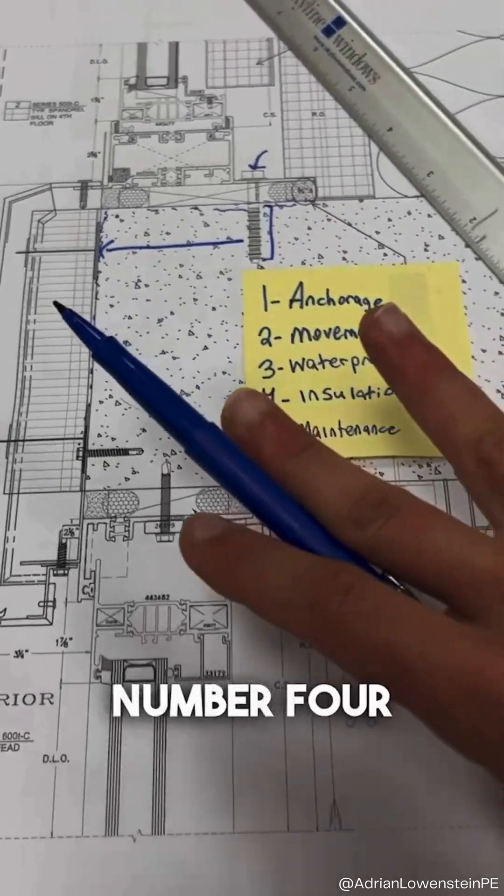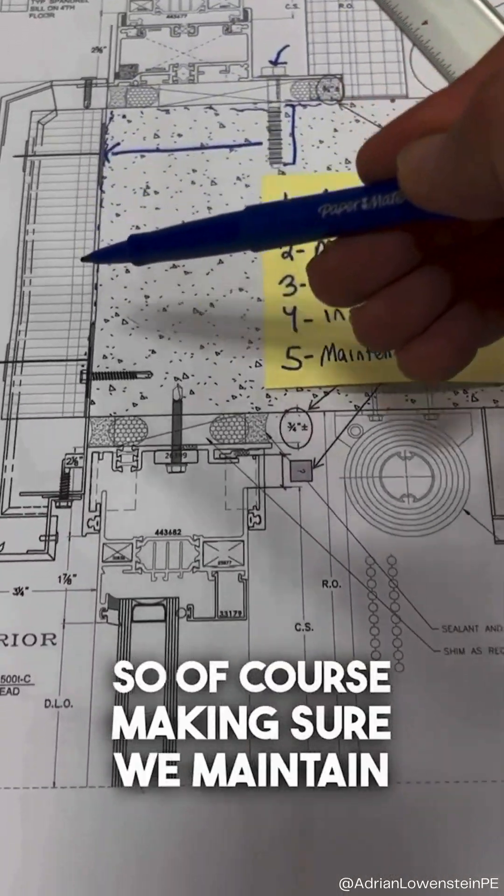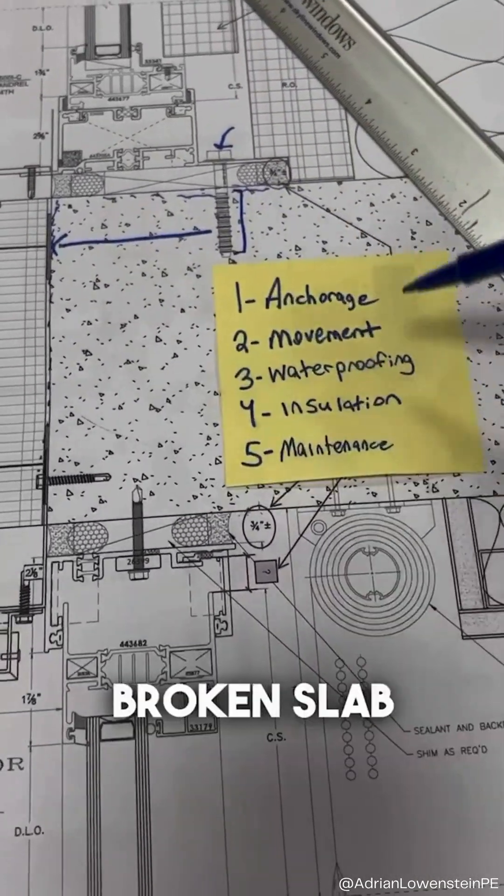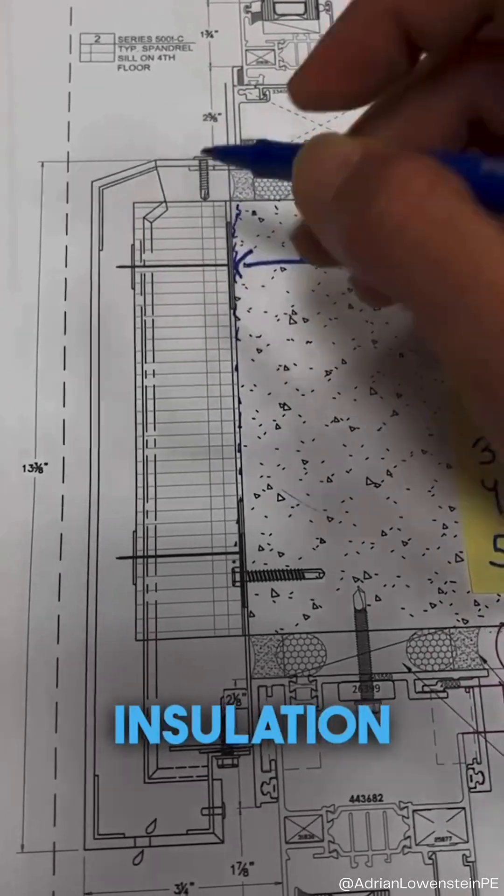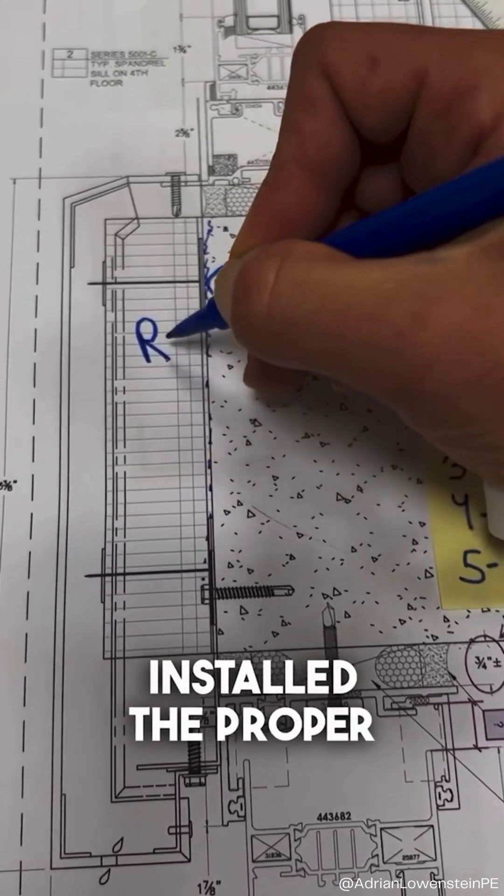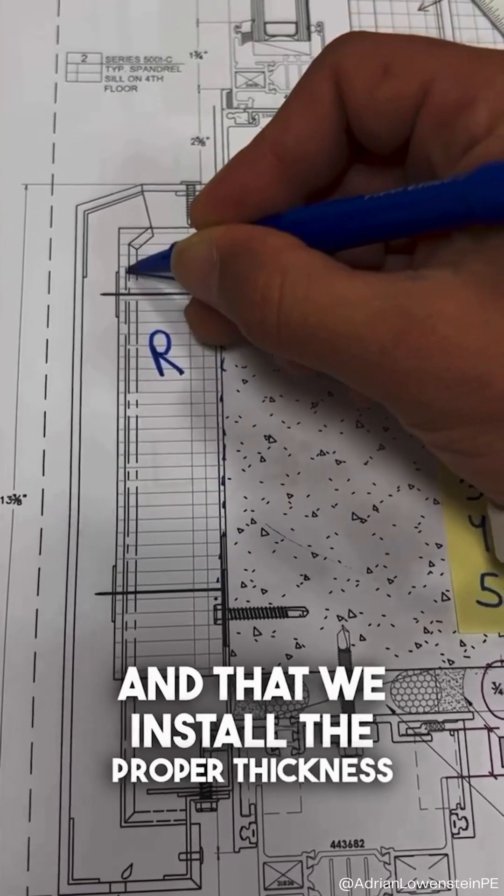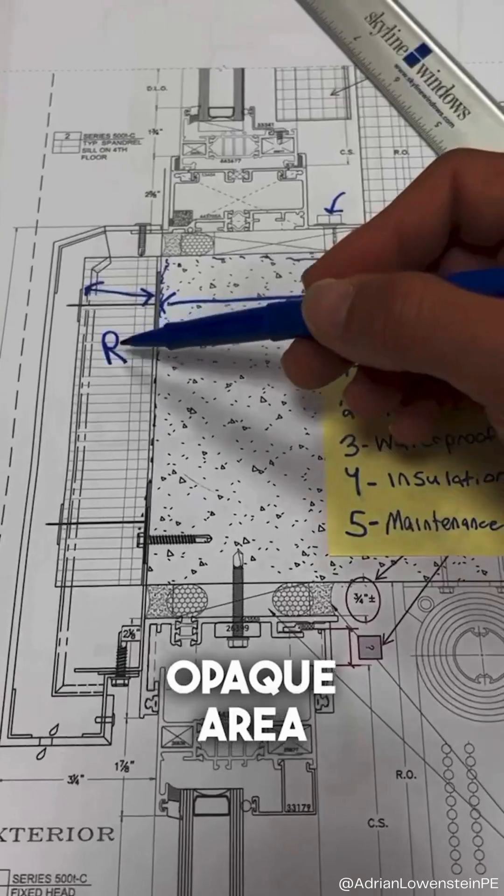Number four is your insulation. So of course, making sure we maintain thermal continuity. But if you don't have a thermally broken slab edge here, you're going to have your insulation. And so making sure that we've specified and installed the proper R value and that we install the proper thickness to make sure that we're properly insulating our opaque area.